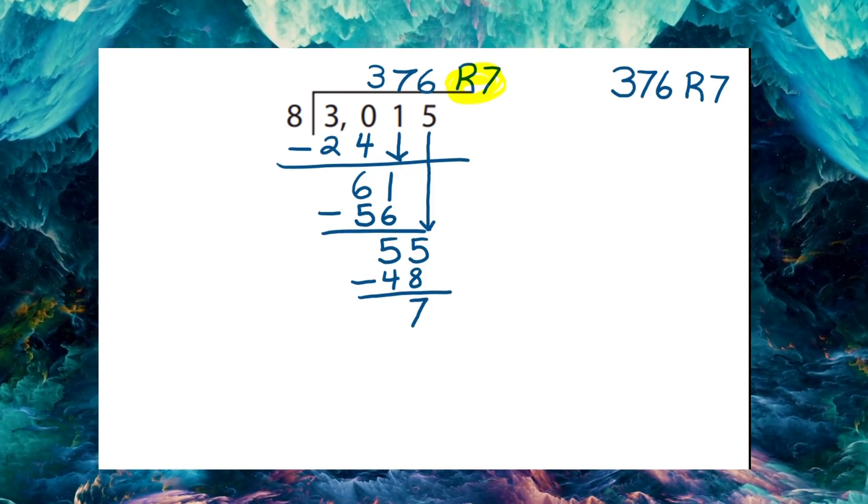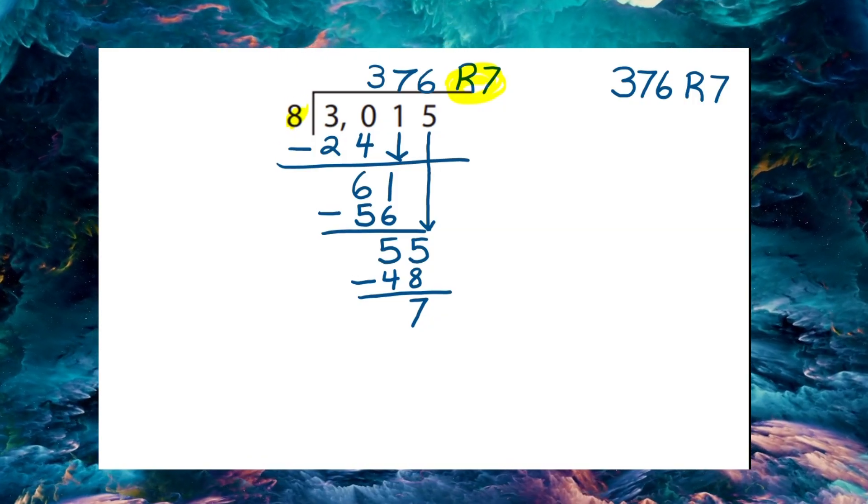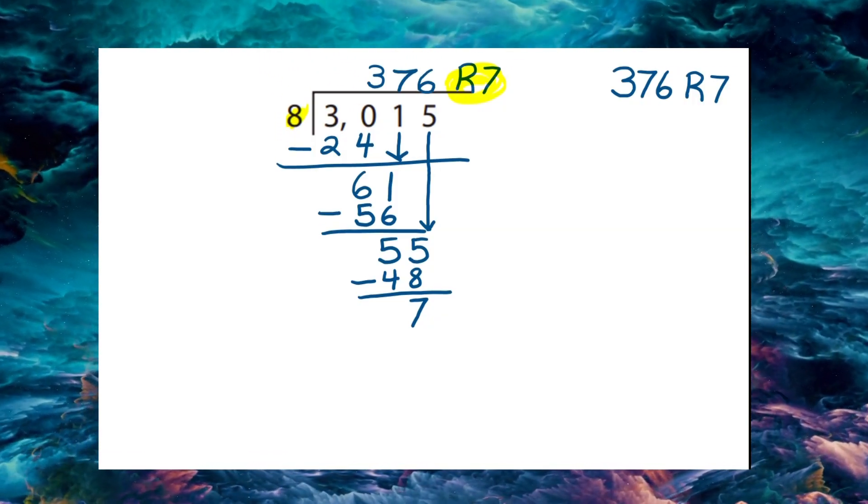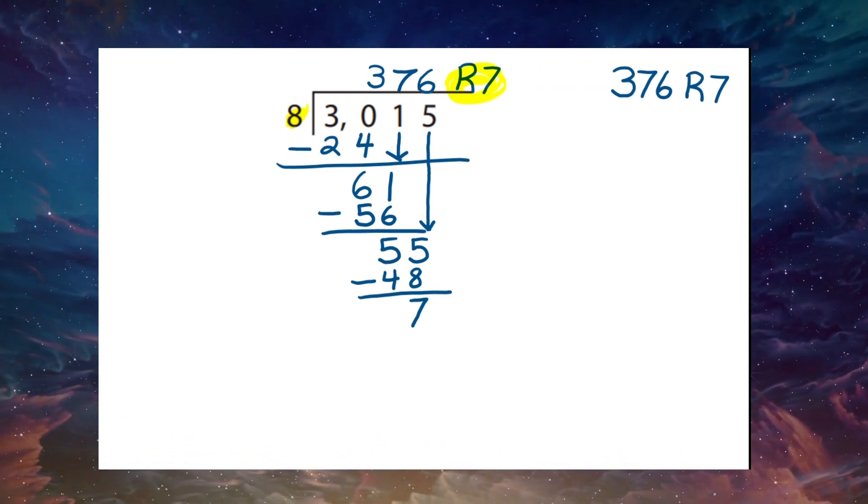The remainder does not want to be left alone. No, the remainder wants to be divided by eight, like everything else, like all of its friends. But how can we do this? It is merely a remainder. Or is it?